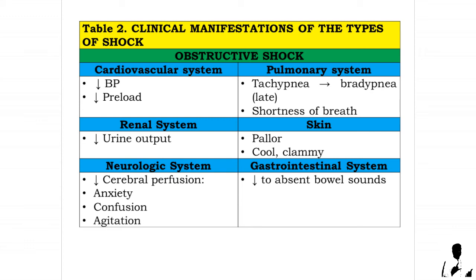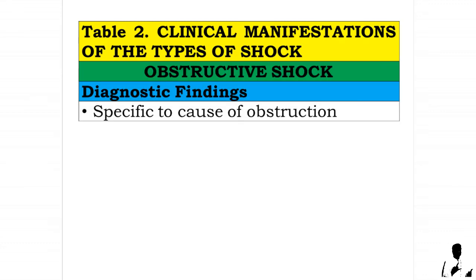Neurologic system: decreased cerebral perfusion that may lead to anxiety, confusion, and agitation. Gastrointestinal system: decreased to absent bowel sounds. Diagnostic findings in obstructive shock are specific to the cause of obstruction.